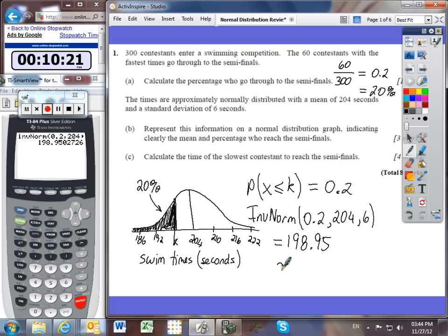We would normally round that off to three significant figures, which is 199 seconds. So if you swam in 199 seconds or less, that is to say faster, then you were in the top 20%, and you qualified for the semifinals.